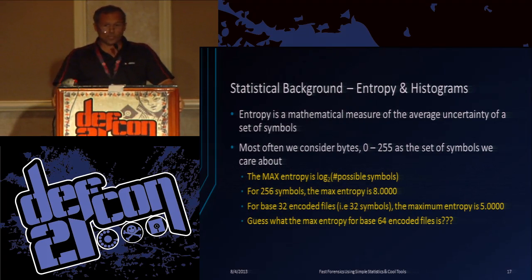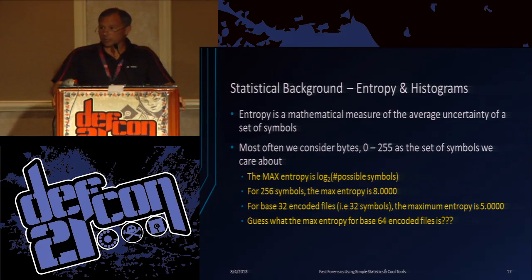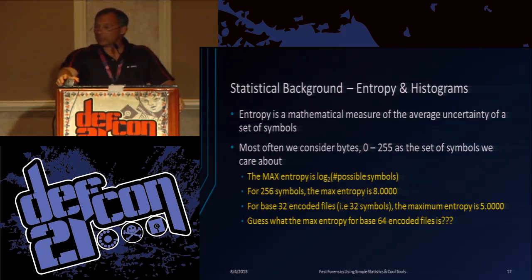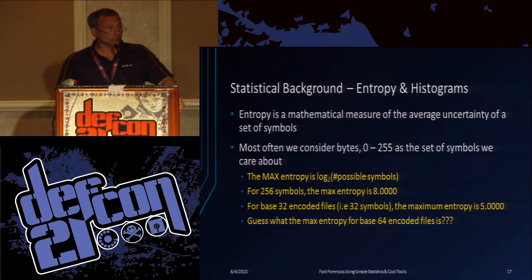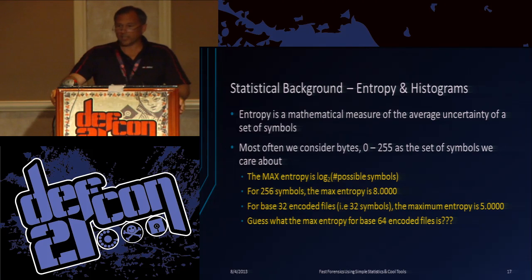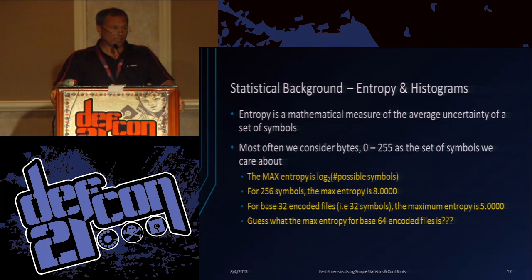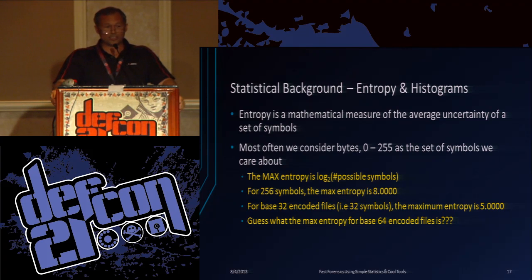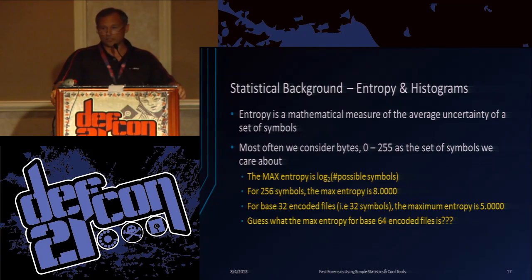Who's heard of entropy before and knows what it is? About half. Usually we consider bytes with computers — zero to 255 — so the maximum entropy is the log base 2 of the total number of symbols. Log base 2 of 256 different symbols is 8, so maximum entropy for a file can be 8. If that file is base 32 encoded, maximum entropy is going to be 5. You can actually tell if base 32 encoding has encoded an encrypted file or just a text file using this tool.